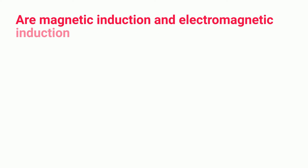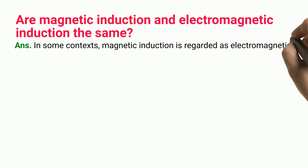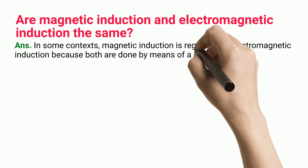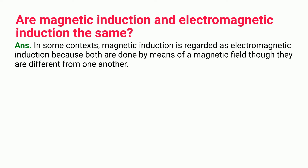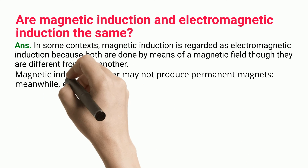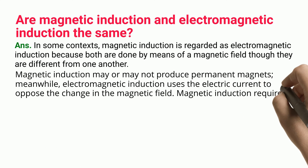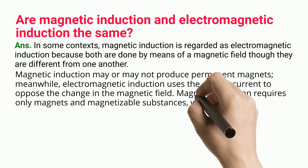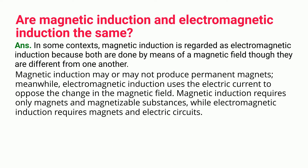Are magnetic induction and electromagnetic induction the same? In some contexts, magnetic induction is regarded as electromagnetic induction because both are done by means of a magnetic field, though they are different from one another. Magnetic induction may or may not produce permanent magnets. Meanwhile, electromagnetic induction uses electric current to oppose the change in the magnetic field. Magnetic induction requires only magnets and magnetizable substances, while electromagnetic induction requires magnets and electric circuits.